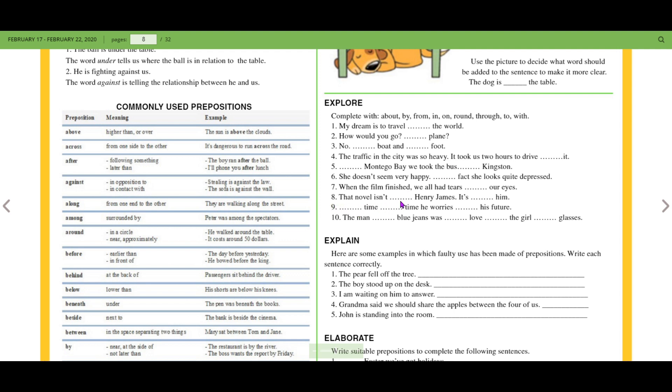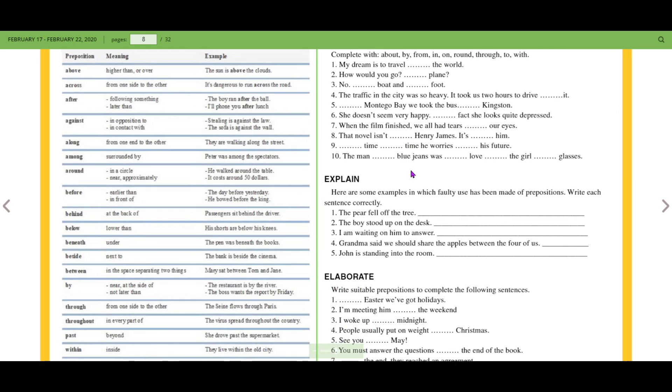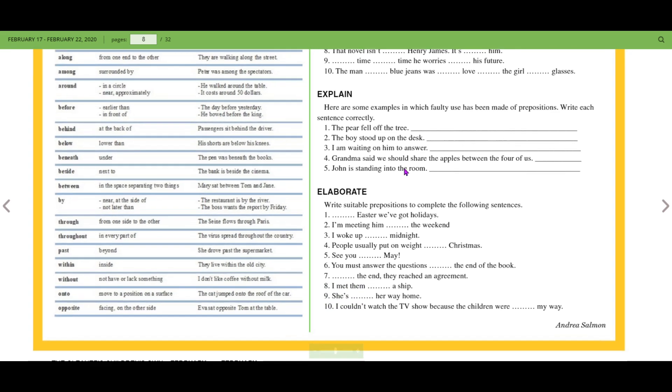The novel isn't by Henry James, it's by him. From time to time, he worries about his future. The man with blue jeans was in love with the girl with the glasses. Perhaps. But you can fill those in and leave them in the comment section below, or turn them into your teachers, so that we can have an extra look at those.